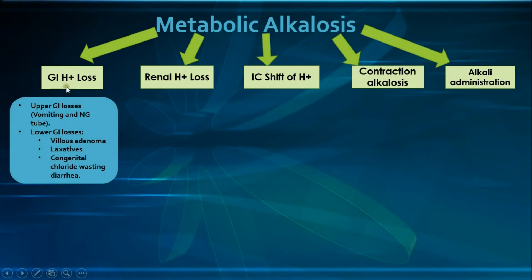For GI hydrogen ion loss, upper GI losses include gastric secretions lost through vomiting or nasogastric tube suction, simply because we're losing acidic gastric contents. For lower GI losses, while most diarrhea types cause metabolic acidosis, certain situations can lead to metabolic alkalosis.